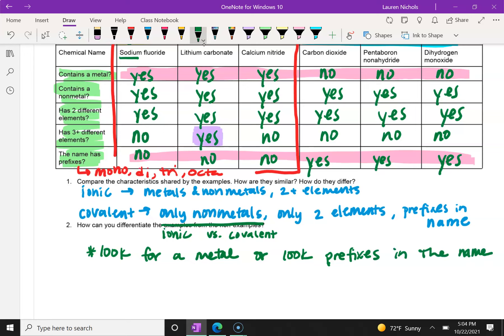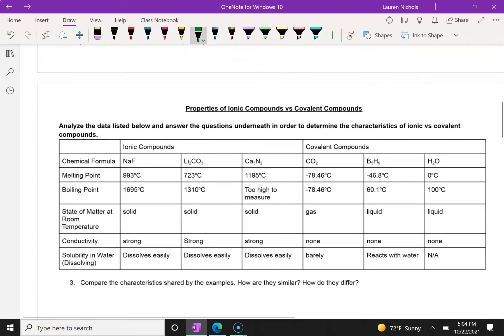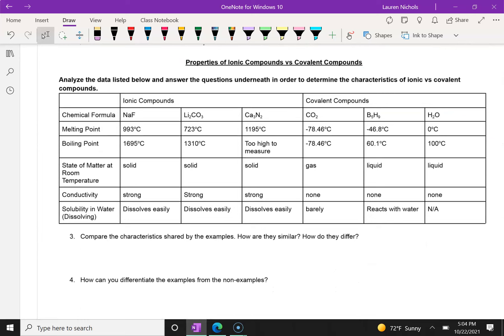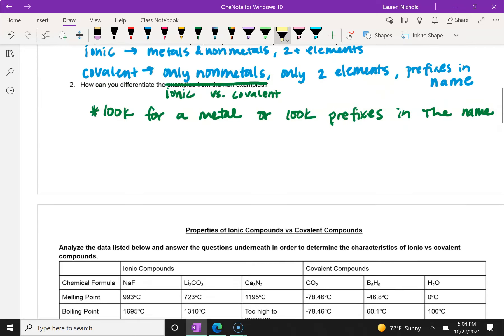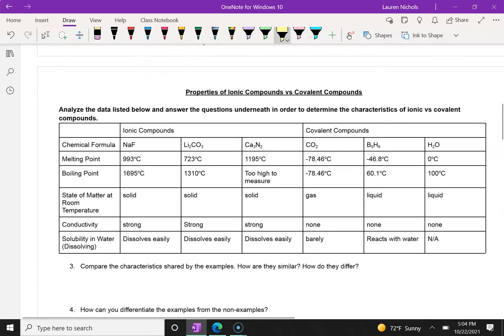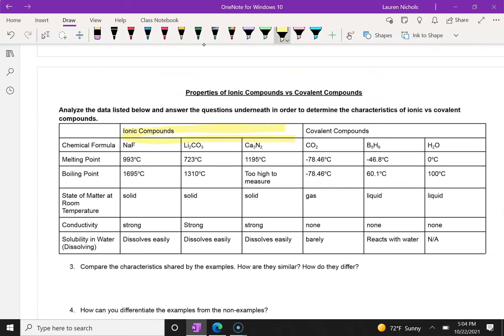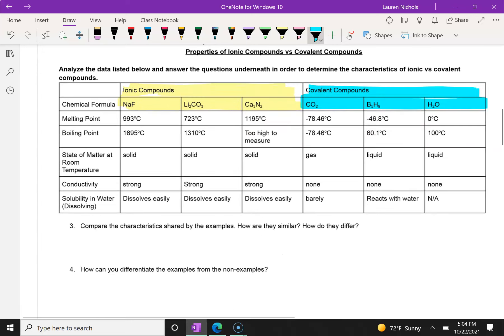Those are the distinguishing characteristics that we can use to identify them. Another thing we can look at is the physical and chemical properties of these ionic and covalent compounds. So if we, again, are looking at the exact same chemicals, our ionic compounds are highlighted in yellow, and our covalent compounds are highlighted in blue. Let's look at these characteristics and compare them.